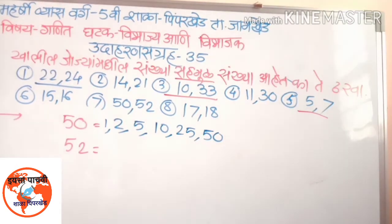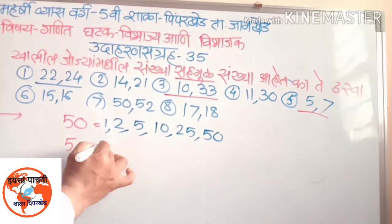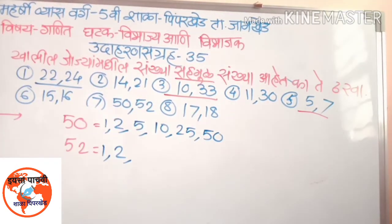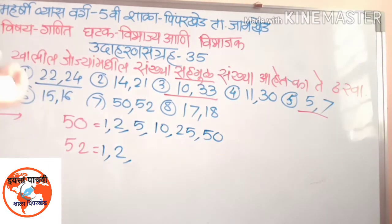बरबर तरेकारलं - एकाने जातो. I am going to give you two, three, four.